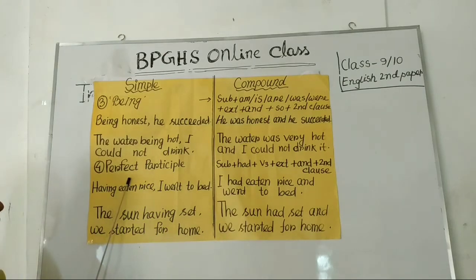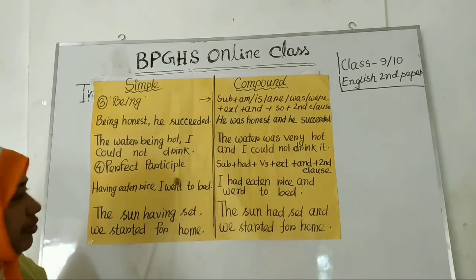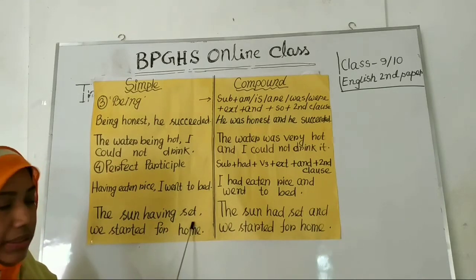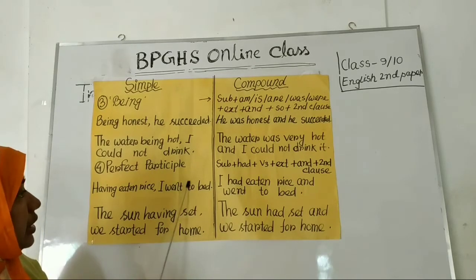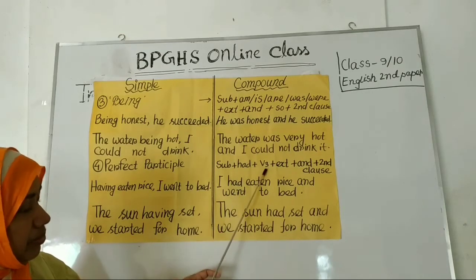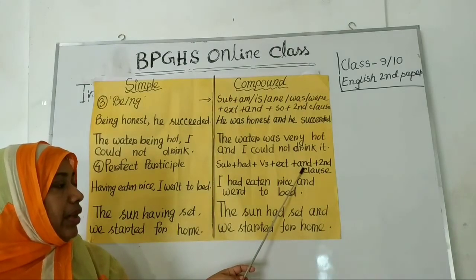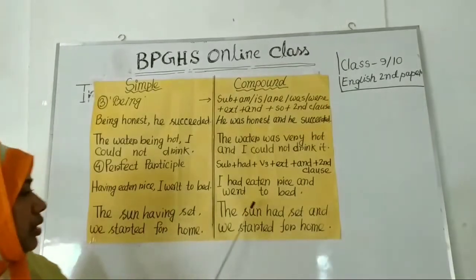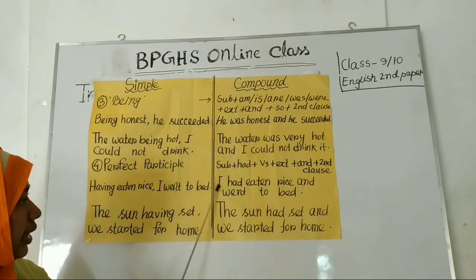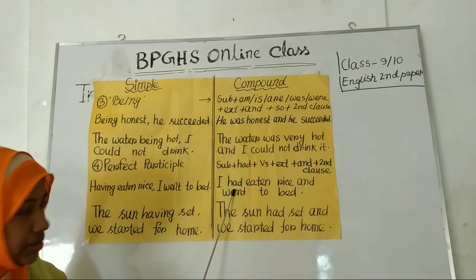Now, rule number four: perfect participle. If you get a simple sentence that has perfect participle — that means having plus past participle — to make it compound, you have to use had and then the past participle form of the verb, then object or extension. After that, use the coordinating conjunction and, and write the second clause. Example: 'Having eaten rice, I went to bed.' The compound is: 'I had eaten rice and went to bed.' The phrase 'having eaten rice' has been turned into the clause 'I had eaten rice.'